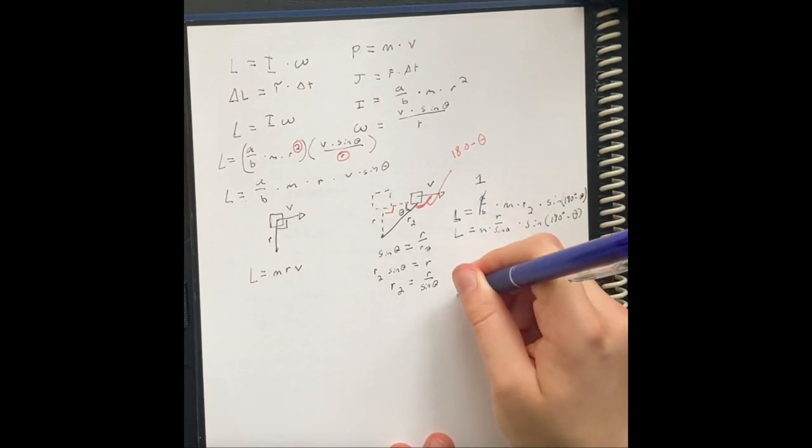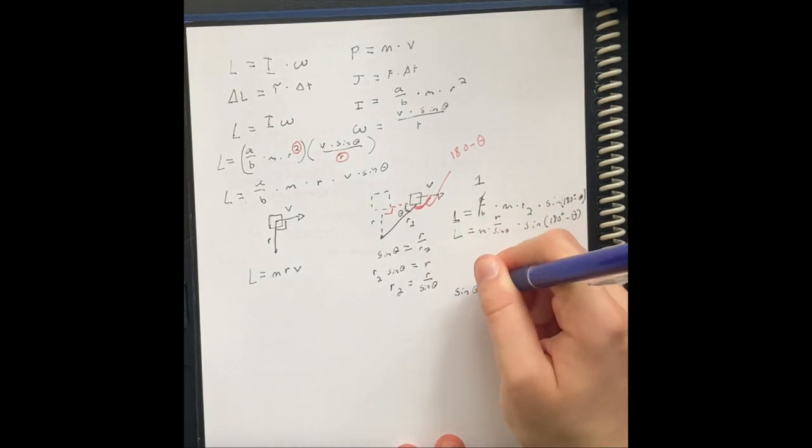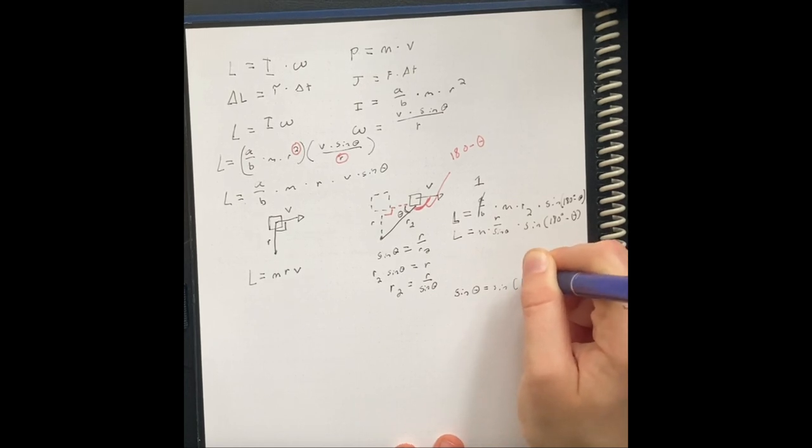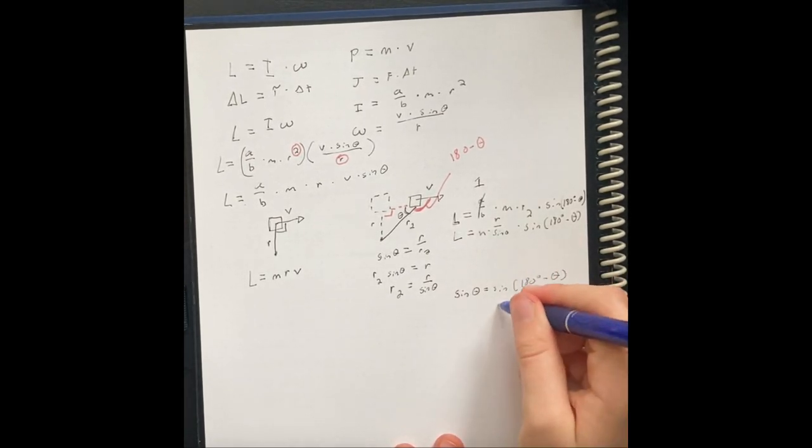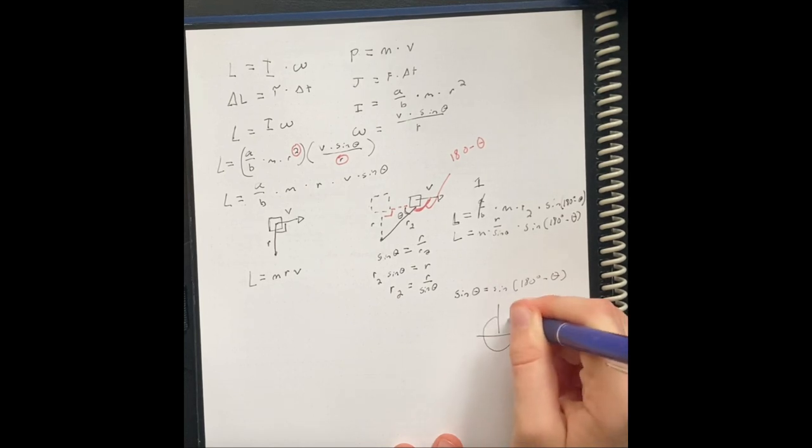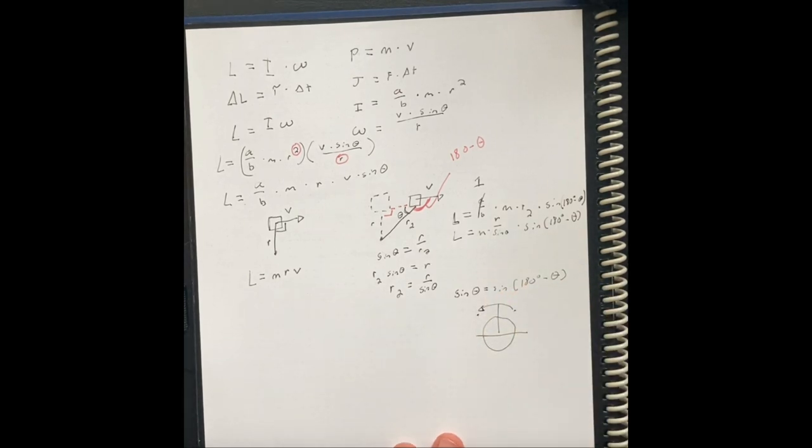When studying sine, and especially during the unit circle, we know that sine of theta is equal to sine of 180 degrees minus theta. Due to the whole nature of the unit circle is that when you reflect a point over here, it's like the same sign. It's pretty cool.